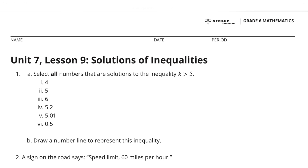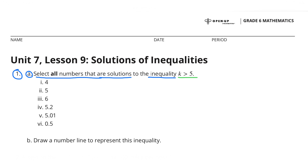Unit 7 Lesson 9, Solutions of Inequalities. Number 1A: Select all numbers that are solutions to the inequality K is greater than 5. I selected 6, 5 and 2 tenths, and 5 and 1 hundredths.